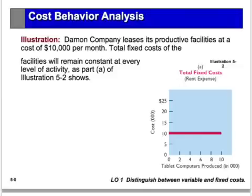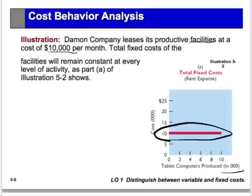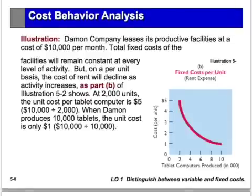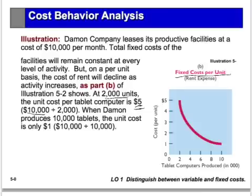For example, Damon leases a production facility for $10,000 a month. Whether they produce 2,000, 4,000, 6,000, or 8,000 computers, the cost is still $10,000. But if we unitize the cost — if we ask what is the fixed cost per unit — the more units produced, the less the cost per unit. If they produce 2,000 units with rent of $10,000, the cost is $5 per unit. If production increases to 10,000 units, the cost drops to $1 per unit. So as we produce more, the fixed cost per unit comes down.